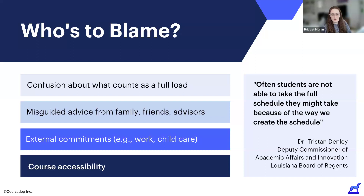External factors also influence students' decisions. Family, friends, or advisors might counsel students to ease into their college career. However, studies have shown that students who take 15 credits in their first semester don't fare any worse than their counterparts who take fewer credits — and some studies show students are more likely to earn better grades with a full load. Of course, our students are juggling outside commitments — caregiving, employment, many obligations. But where we'll focus today is course accessibility: if students can't access the courses they need, they won't be able to take enough credits to stay on track for on-time completion.